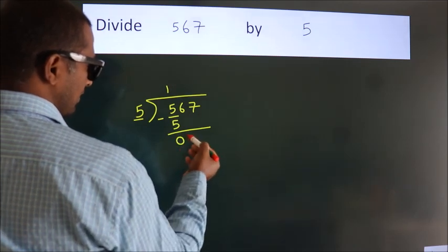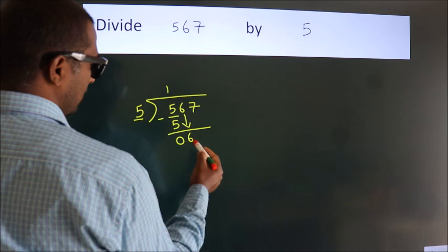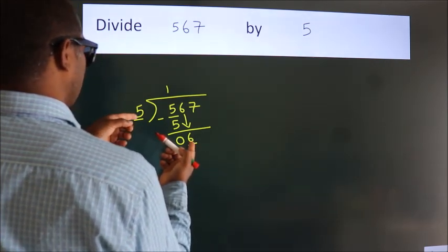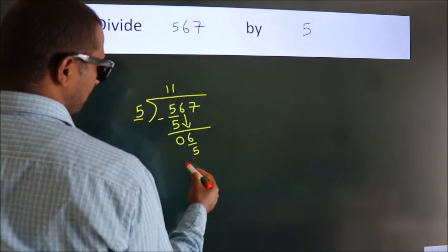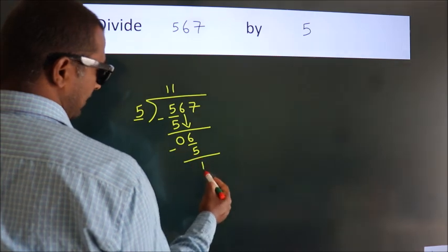After this, bring down the beside number. So 6 down, so 6. A number close to 6 in 5 table is 5 once, 5. Now we subtract. We get 1.